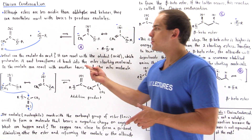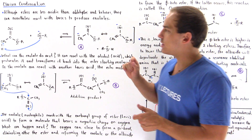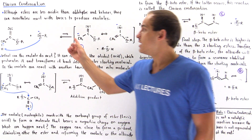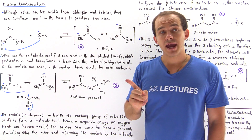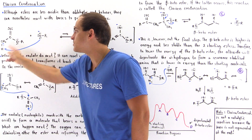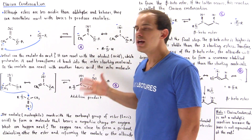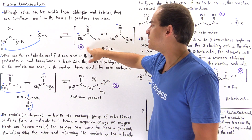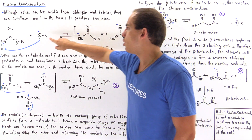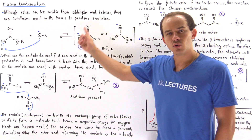Let's examine the first step of the reaction mechanism. Our base, which is usually alkoxide, acts as a strong base, deprotonating the alpha-hydrogen off of the alpha-carbon of the ester molecule. We form a resonance-stabilized intermediate — the enolate intermediate, which we'll call intermediate A. We also form the alcohol from this alkoxide.